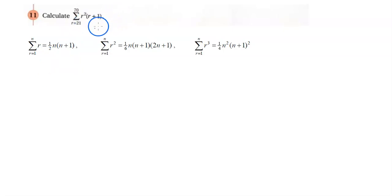First thing to observe is that this sum is actually equal to the sum from r equals 1 to 70 of r squared times r plus 1, which we can write as r cubed plus r squared, and minus the sum from r equals 1 to 20 of the same thing.